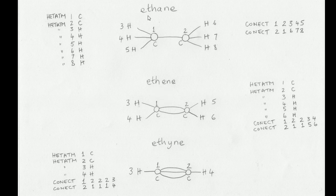Next, I'm going to make a model of the ethane molecule, which has eight atoms. These are the connections of the carbon atoms: Atom 1 is connected to atoms 2, 3, 4, and 5, and Atom 2 is connected to atoms 1, 6, 7, and 8.